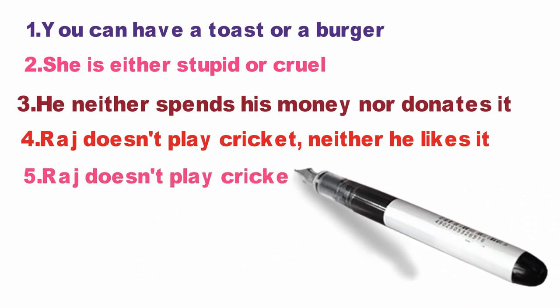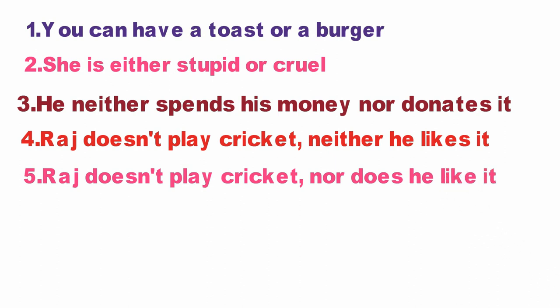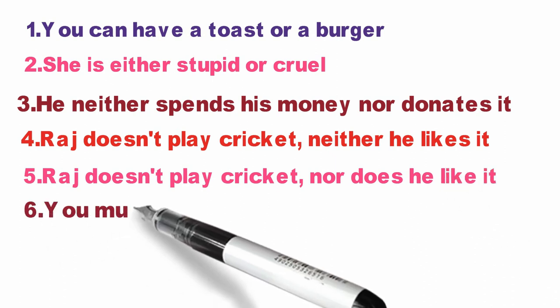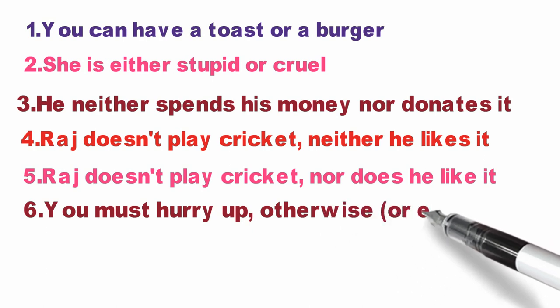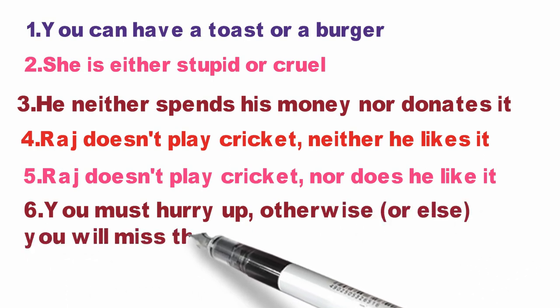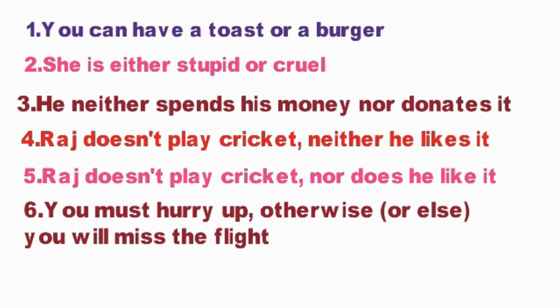Raj doesn't play cricket, nor does he like it. You must hurry up, otherwise or else you will miss the flight. You can have either a toast or a burger. She is either stupid or cruel. You must hurry up, otherwise you will miss the flight. Two alternatives are presented in all these sentences — these are disjunctive conjunctions.